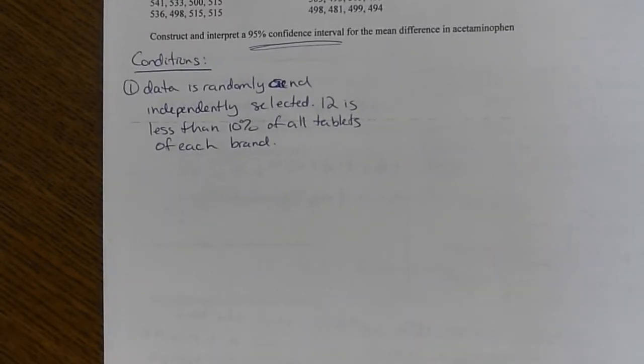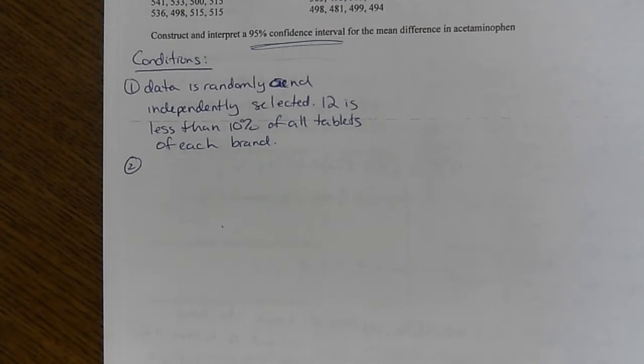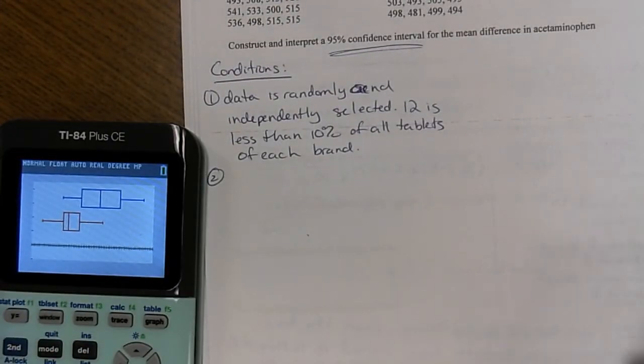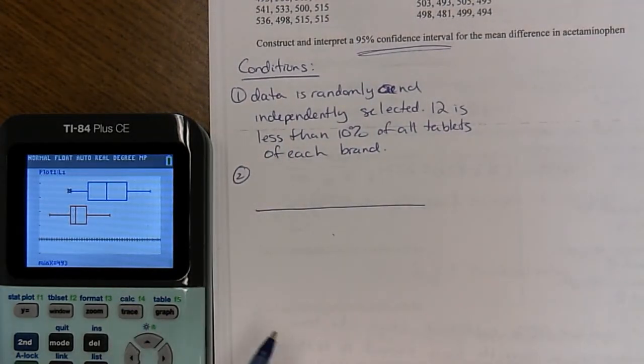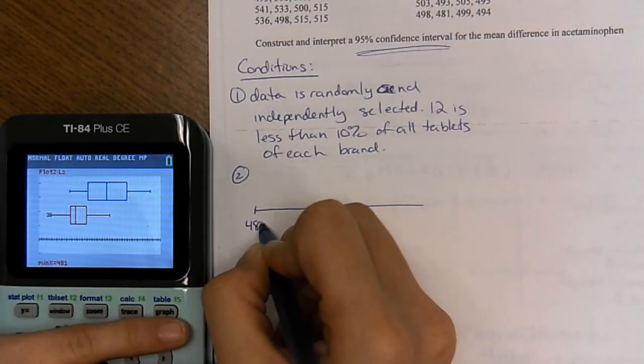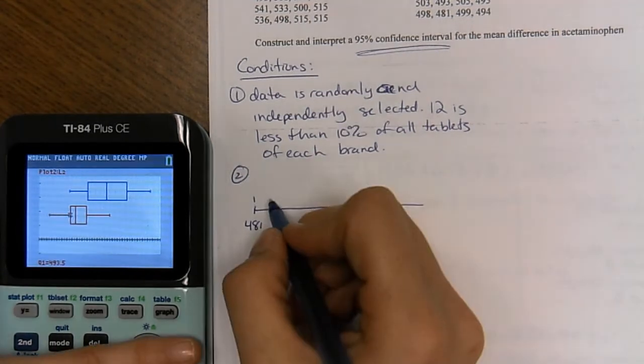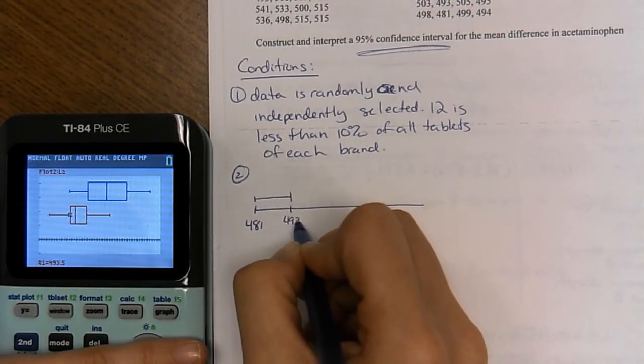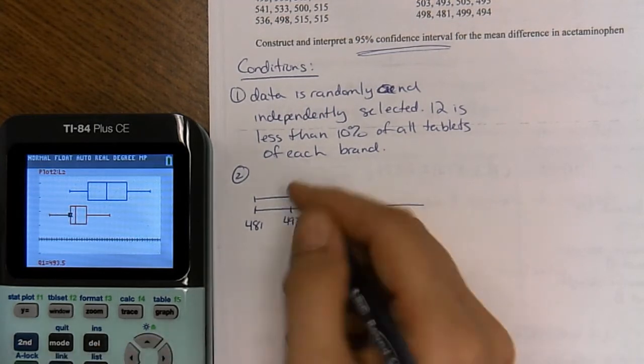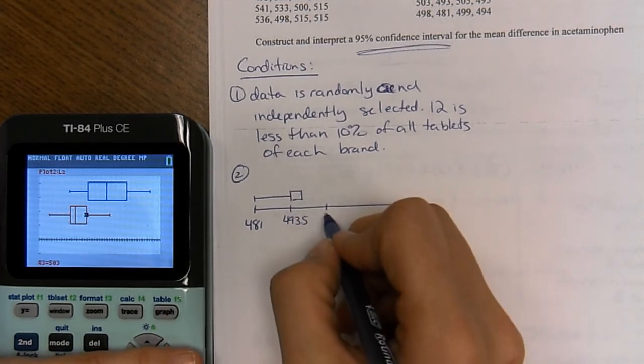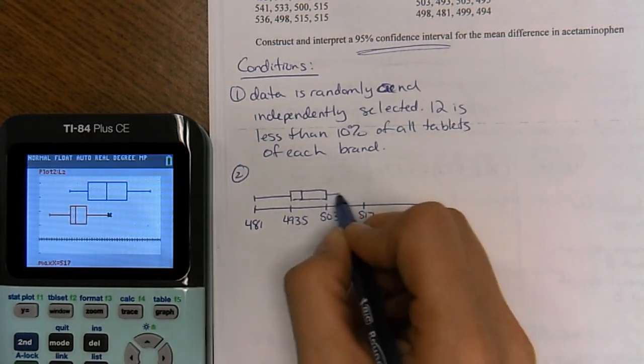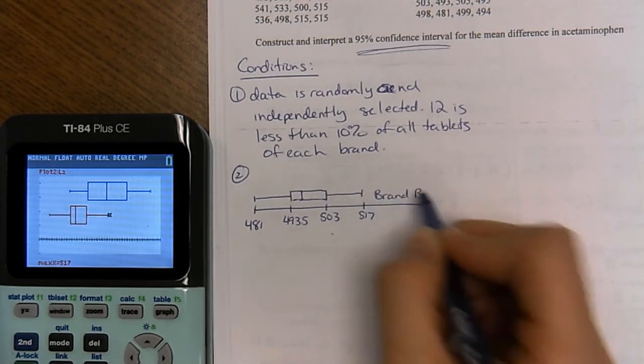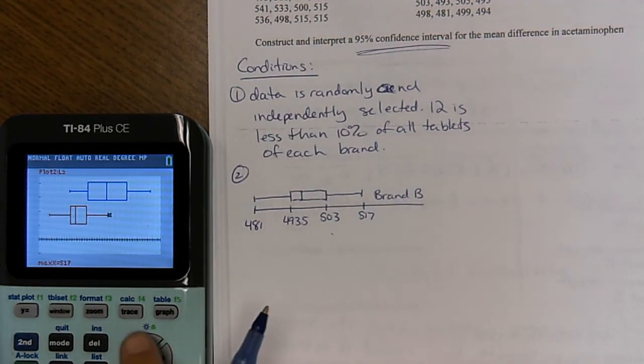Now when you do condition two, we're going to do one sketch for the two boxplots. So you can use one scale. So when I go to do this, I'm going to hit the trace button. So I hit the trace button and I'm going to go down and say, okay, the min is 481. You don't have to have every number. Q1 is 493.5. I'm going to skip the median for brand B. Q3 is 503. And the max is 517. And then I'm going to make sure to say, okay, this is brand B at the bottom.